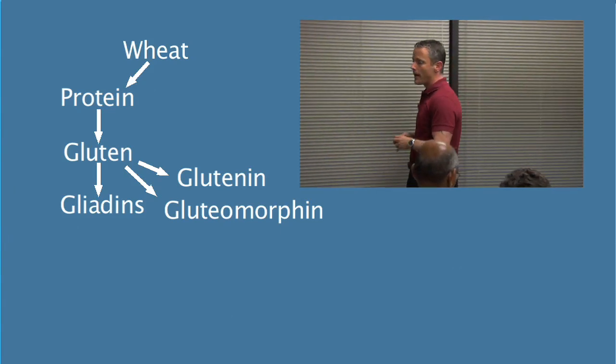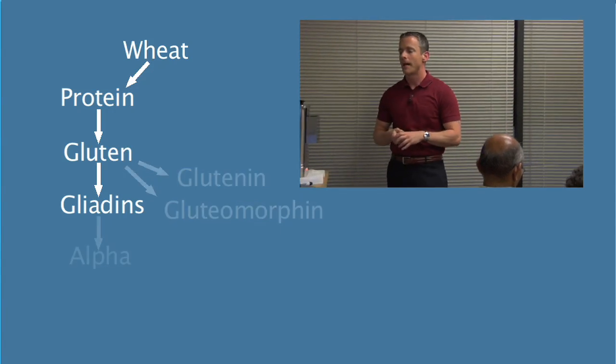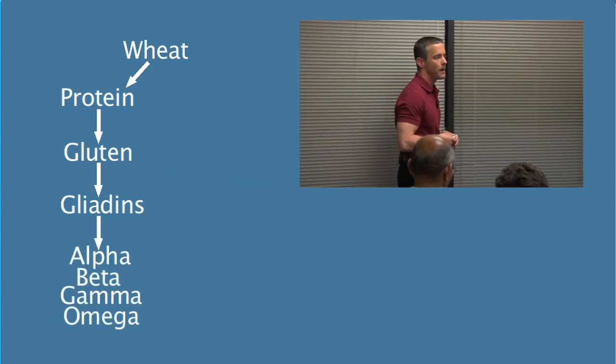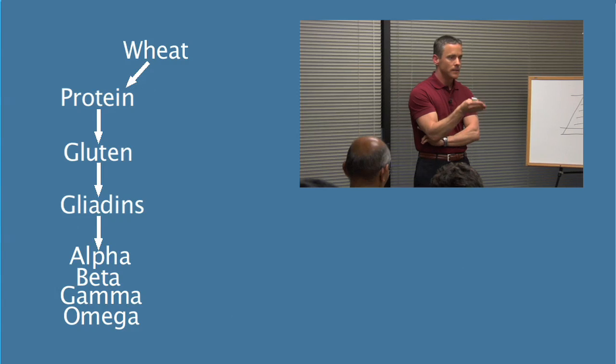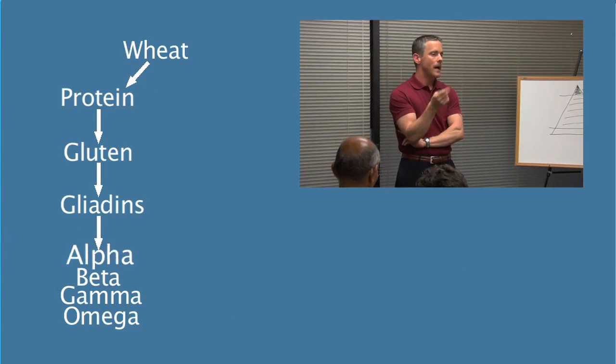Gliadins have four epitopes, which is alpha, beta, gamma, and omega. Traditional testing only looks at alpha gliadin.